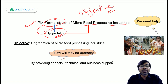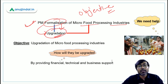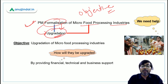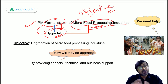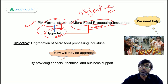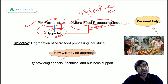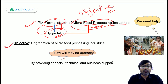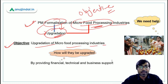Formalization means upgradation — specifically, upgradation of micro food processing industries. Under this scheme, micro food processing industries will be upgraded. So the objective is clear: upgradation of micro food processing industries.